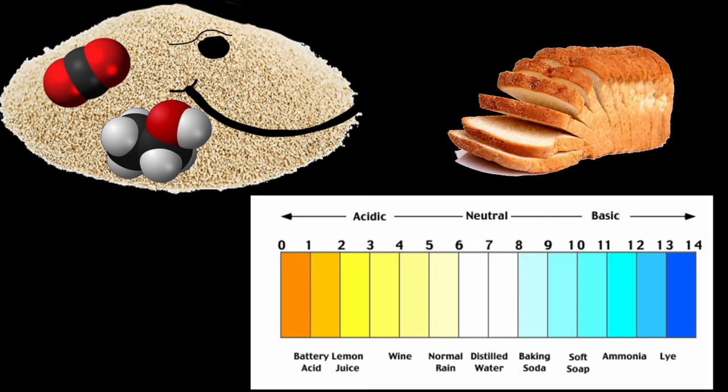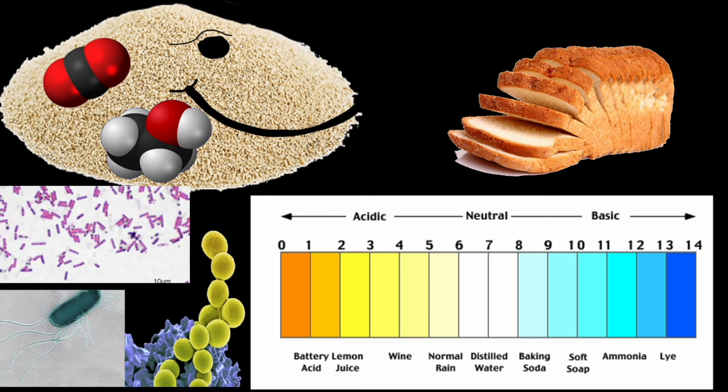The pH of this environment is usually around 4 to 6, which is less than neutral at a pH of 7. This slightly acidic pH helps give bread a bit of a tangy flavor. It also stops bad microbes, like Bacillus, E. coli, and Staphylococcus, from moving into the dough because they don't like the acidic environment.